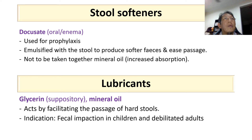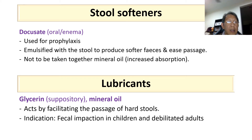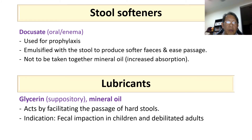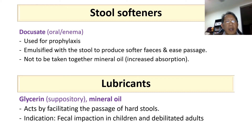For lubricants, examples are glycerin and mineral oil. They aid by facilitating the passage of hard stool. They are usually used in fecal impaction in children and also in debilitated adults.